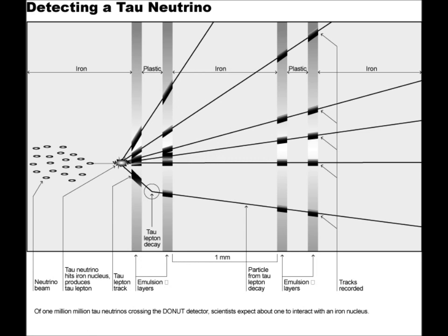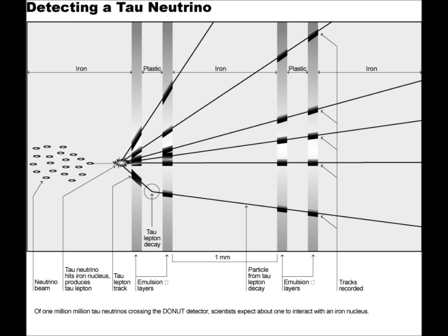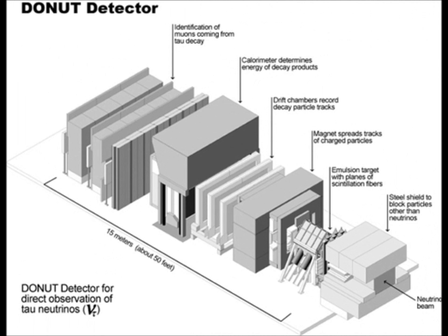The discovery of the tau neutrino was announced in July 2000 by the DONUT collaboration, which is the direct observation of the nu tau. The DONUT experiment from Fermilab was built during the 1990s to specifically detect the tau neutrino. These efforts came to fruition in 2000.